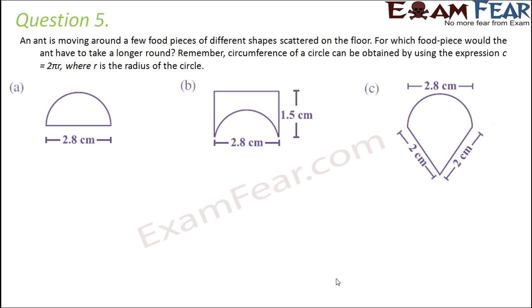Where r is the radius of the circle. Here you have three different shapes. The ant is moving along the lines drawn on these three different shapes. We need to find out the perimeter — that is, the total length of the boundary for all three shapes — and then compare for which the perimeter is maximum. Wherever the perimeter is maximum, the ant is travelling the maximum distance.